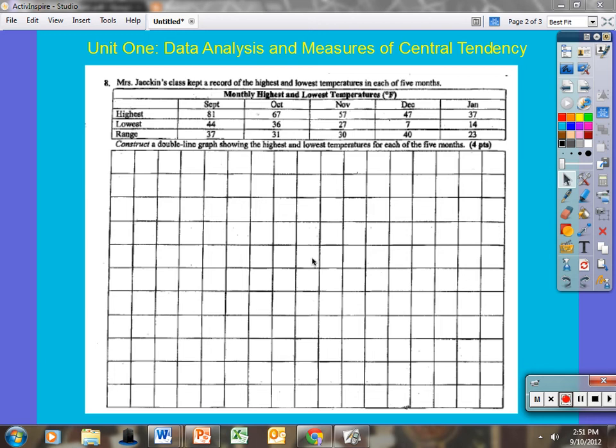Take a look at this next one here. Mrs. Jenkins' class kept a record of the highest and lowest temperatures in each of five months. See our table here: highest, lowest, range. Here's the temperature listed. Construct a double line graph showing the highest and lowest temperature for each of the five months. If I take a look, I can see that I'm constructing a double line graph. Many of us constructed a bar graph for this one on the pretest, which would explain why we had it wrong. We have to construct one for both the highs and the lows over a five month period.